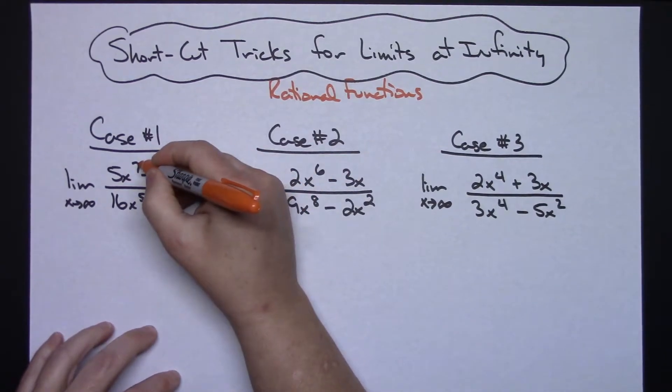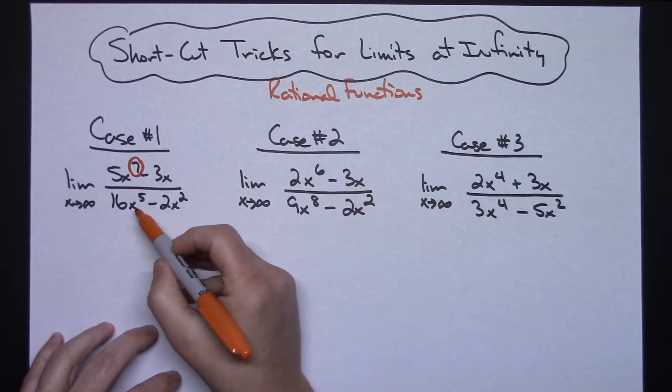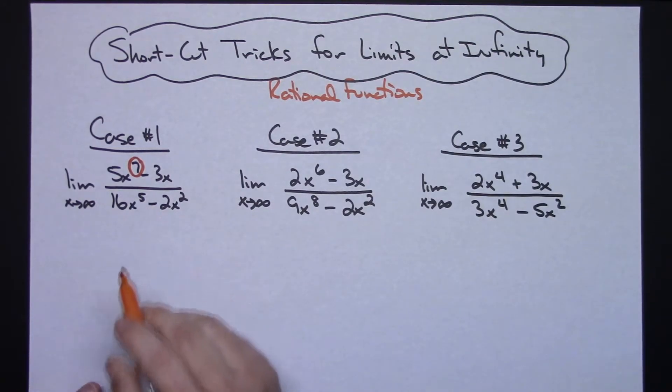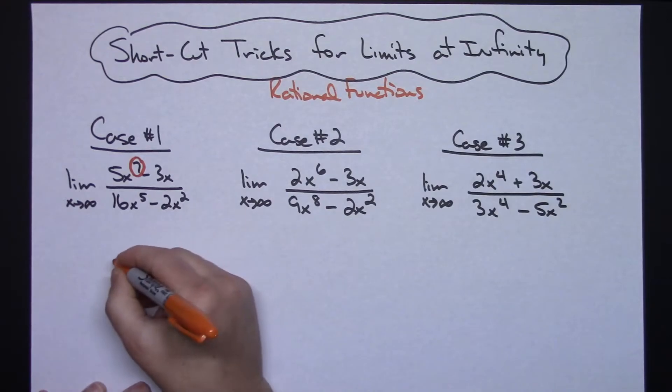When the degree in the numerator, which is 7, is bigger than the degree in the denominator, which is 5, then I know since X is approaching infinity, my limit is going to be positive infinity.